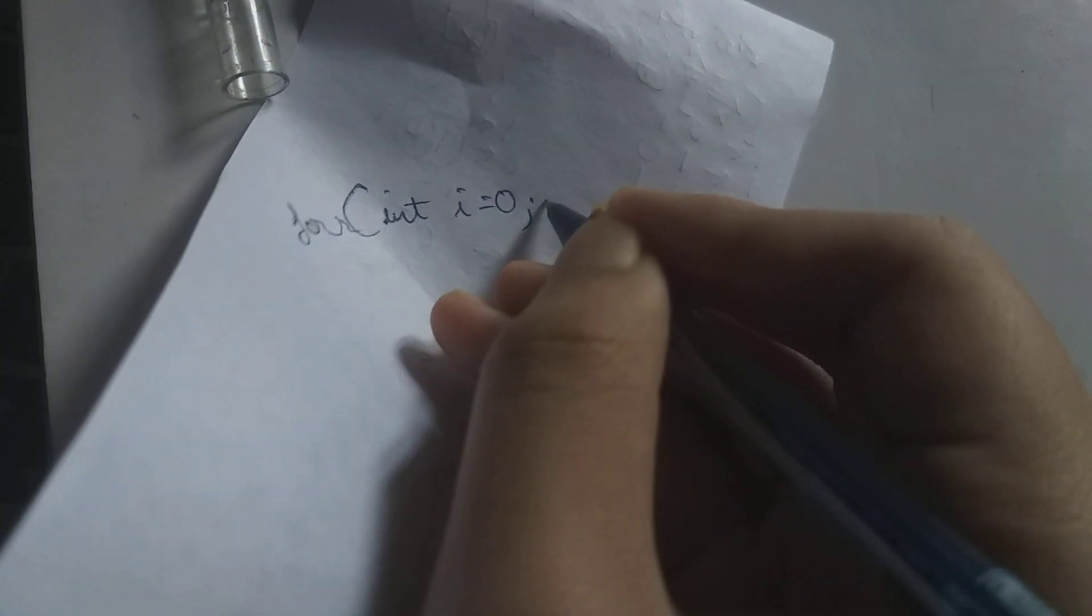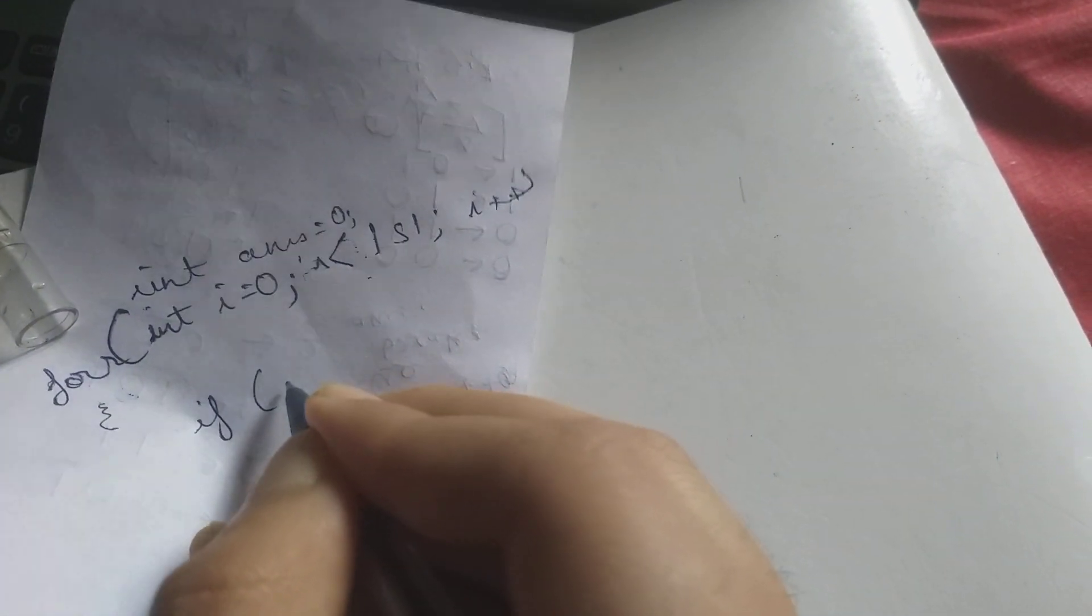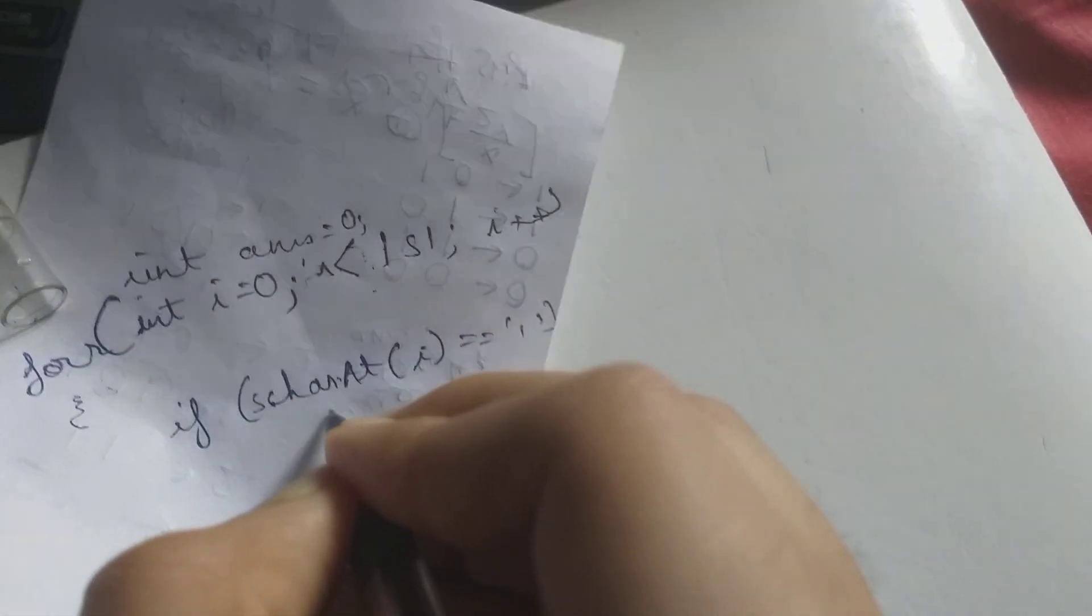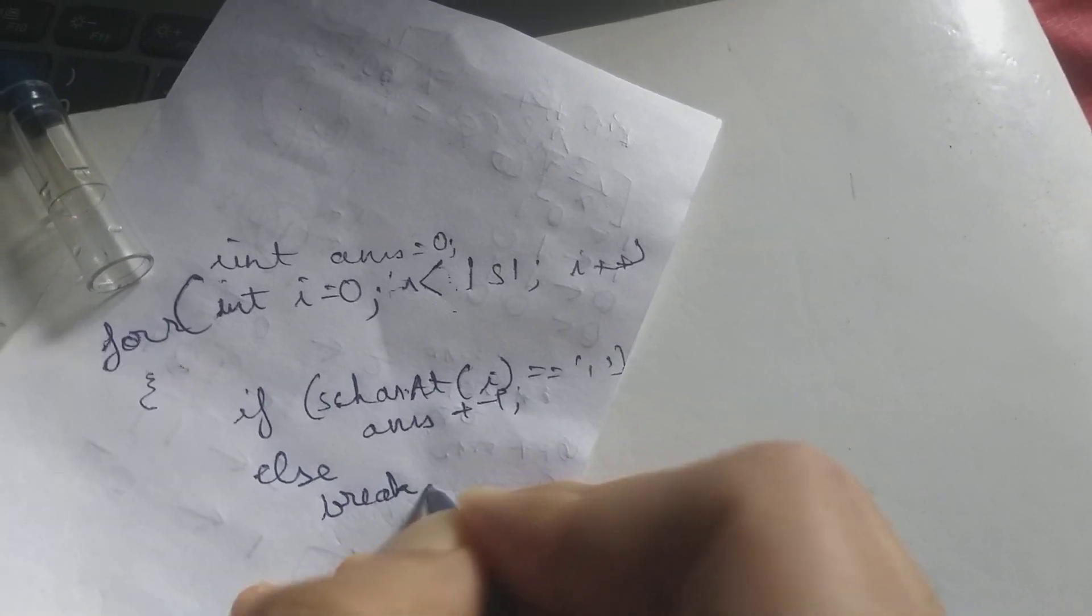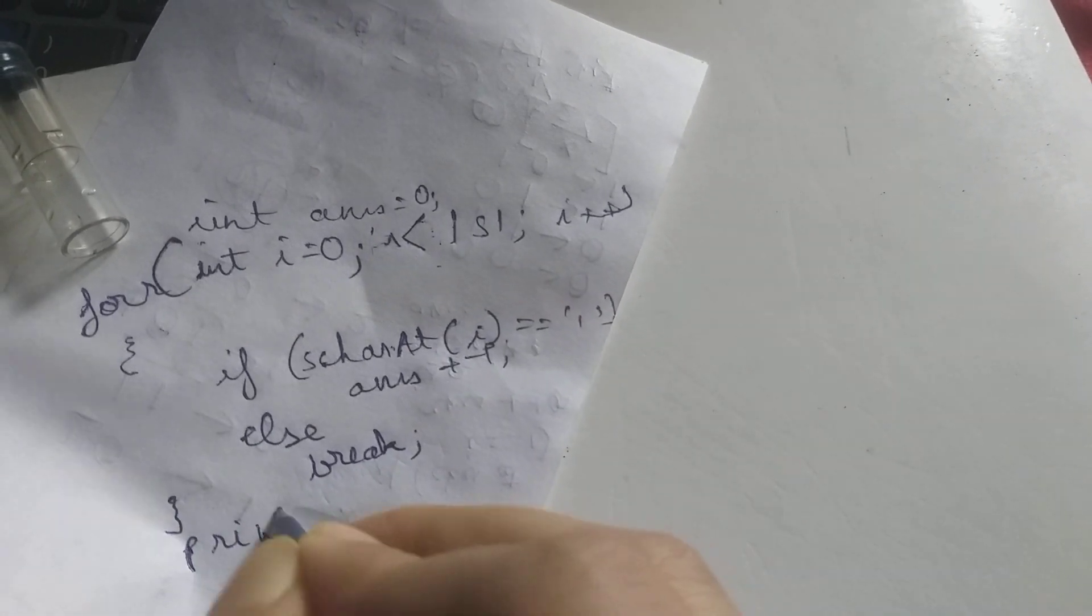The basic code for this would be run a loop for int i equals 0, i is less than length of s, i plus plus. Initialize a variable answer equals to 0. So if character at s.charAt i is equals to equals to 1, answer plus plus. Else simply break. And print answer.